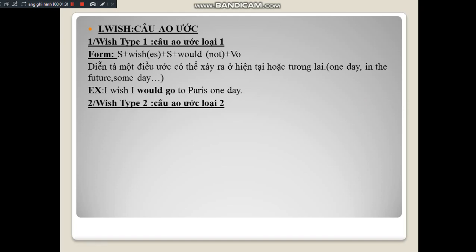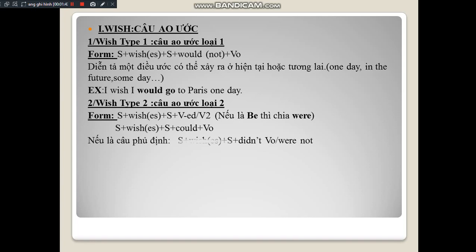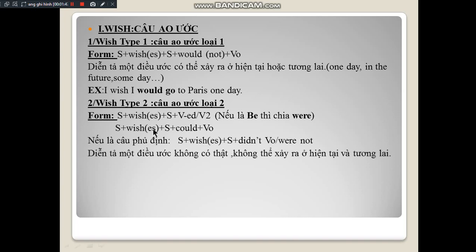Number two: Type 2 wish clauses (câu ao ước loại 2). Now look at the formula. Subject + wish + subject + verb (past form). If the verb is regular, add '-ed'; if irregular, use the second column (past form). Note: if the verb is 'to be,' use 'were.' Another form is: Subject + wish + subject + could + bare infinitive. For negative: Subject + wish + subject + didn't + bare infinitive, or if 'to be,' use 'were not.'